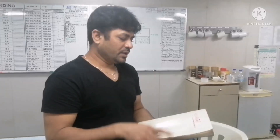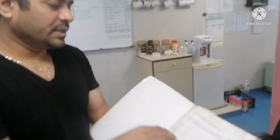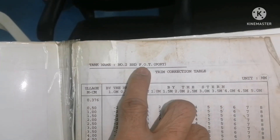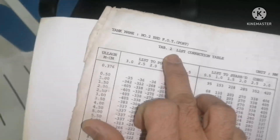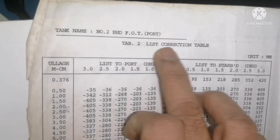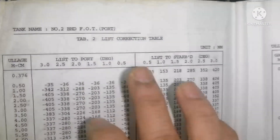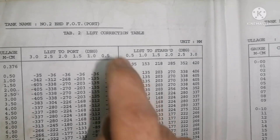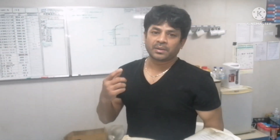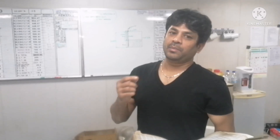So we need to calculate this. First, we use the trim correction table — see this fuel oil tank port side. Then the list correction table. We need to calculate the list and trim, then calculate the final value including the trim correction and bulk calculation.